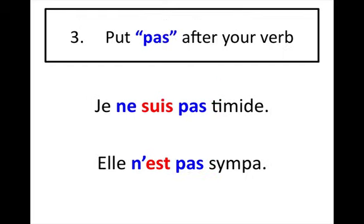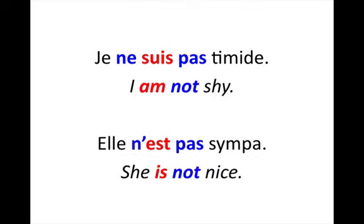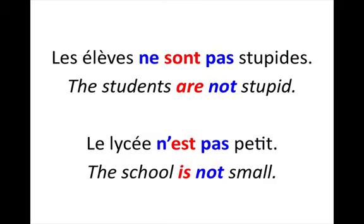Third step is to put the word pas after the verb. Je ne suis pas timide. Elle n'est pas sympa. Les élèves ne sont pas stupides. Le lycée n'est pas petit.